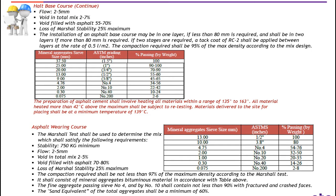The table below shows various mineral aggregate sieves versus ASTM gradings in inches, and percentage of passing by weight. An important point highlighted in red: the preparation of asphalt cement shall involve heating all materials within a range of 135 to 163 degrees Celsius. All material heated more than 42 degrees Celsius above the maximum shall be subject to retest. Materials delivered to the site for placing shall be at a minimum temperature of 139 degrees Celsius — a very important point to remember.